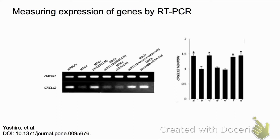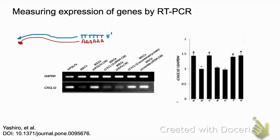The first one we're going to talk about is what's known as reverse transcription PCR. We've already talked about the process of reverse transcription, in which mRNAs are reverse transcribed using an oligo-dT primer and reverse transcriptase into a cDNA. This cDNA can then be amplified by PCR to produce many fragments.